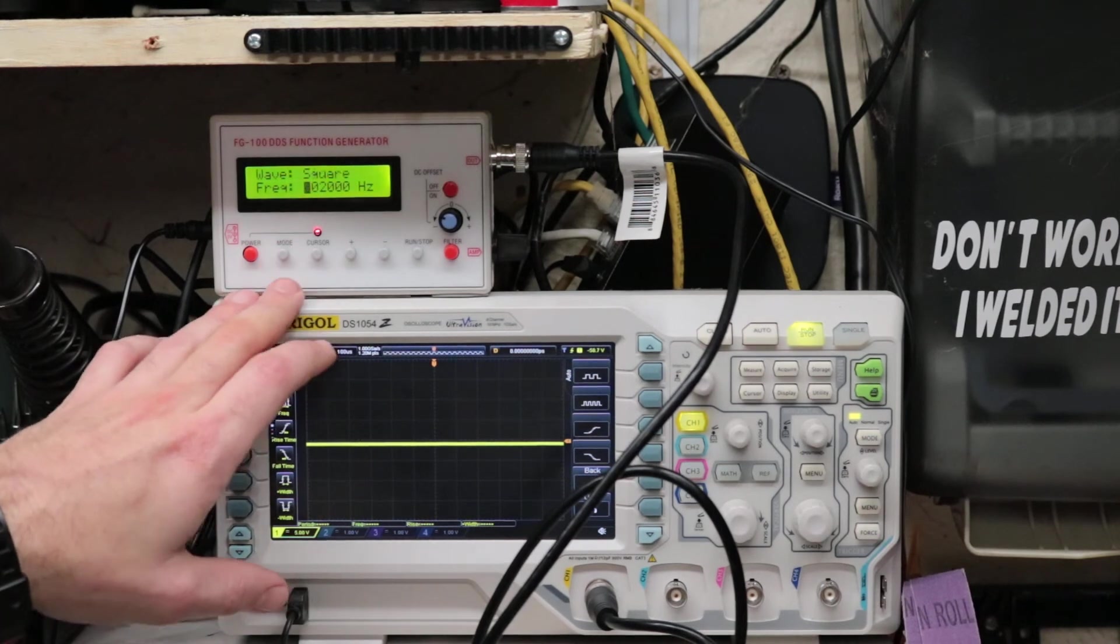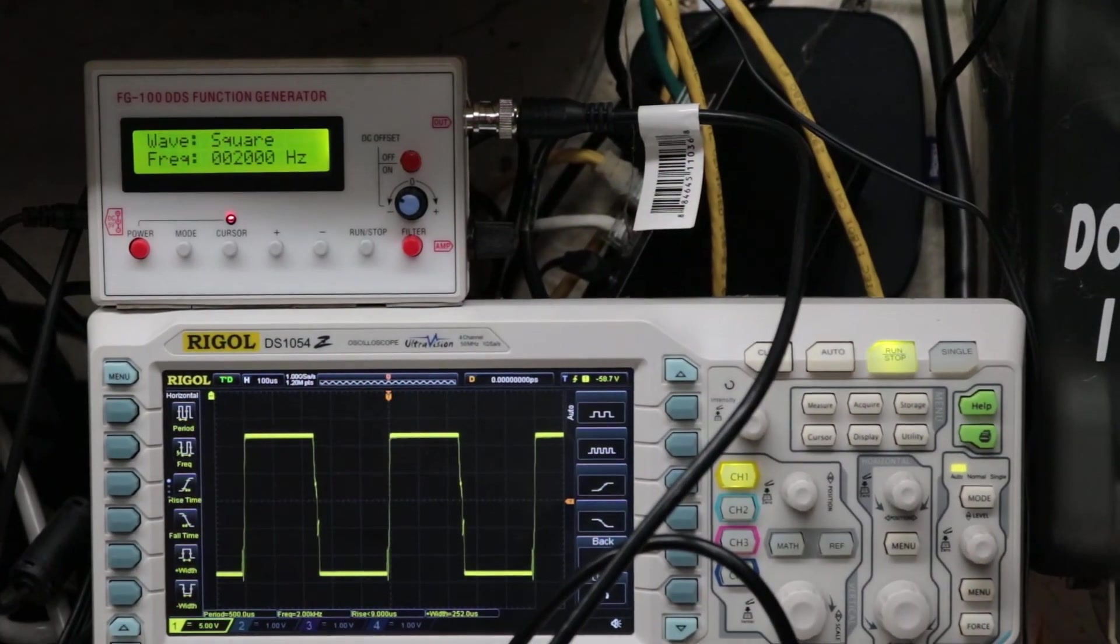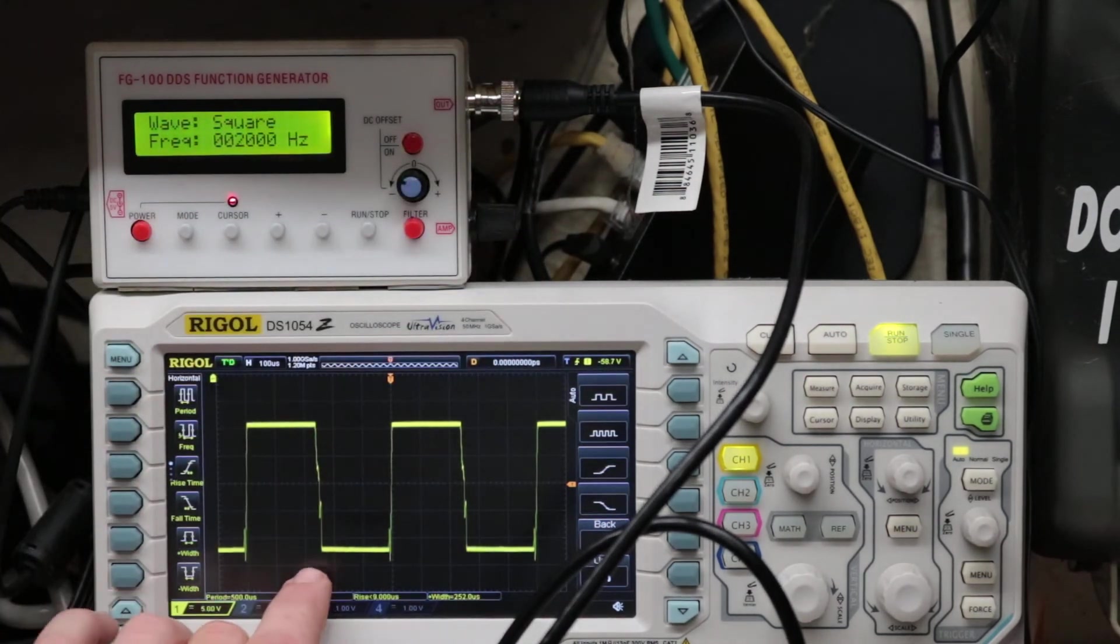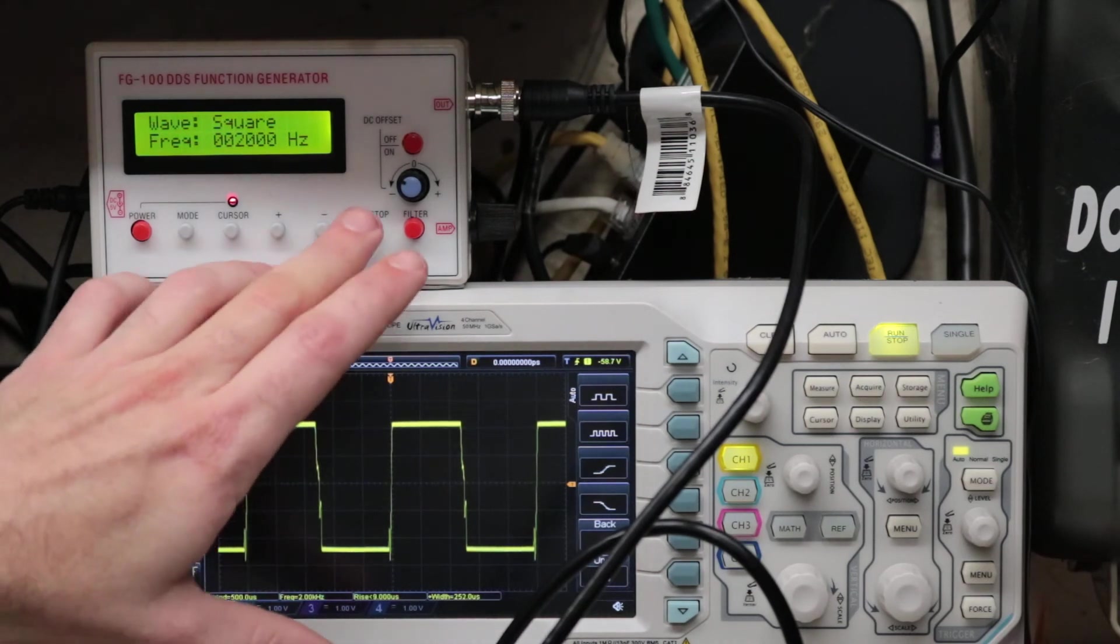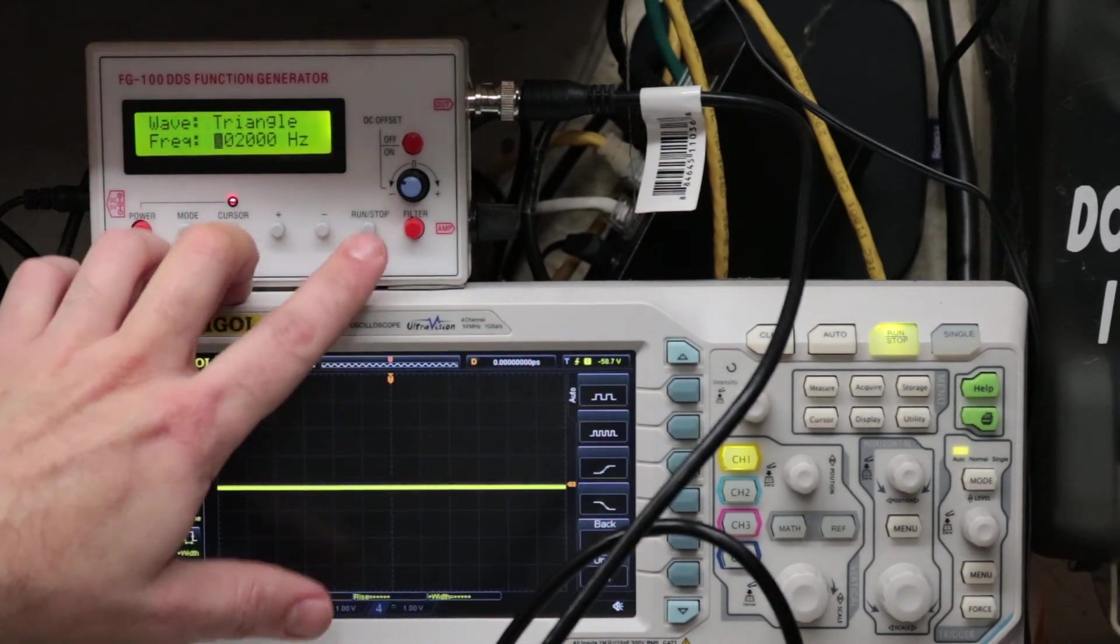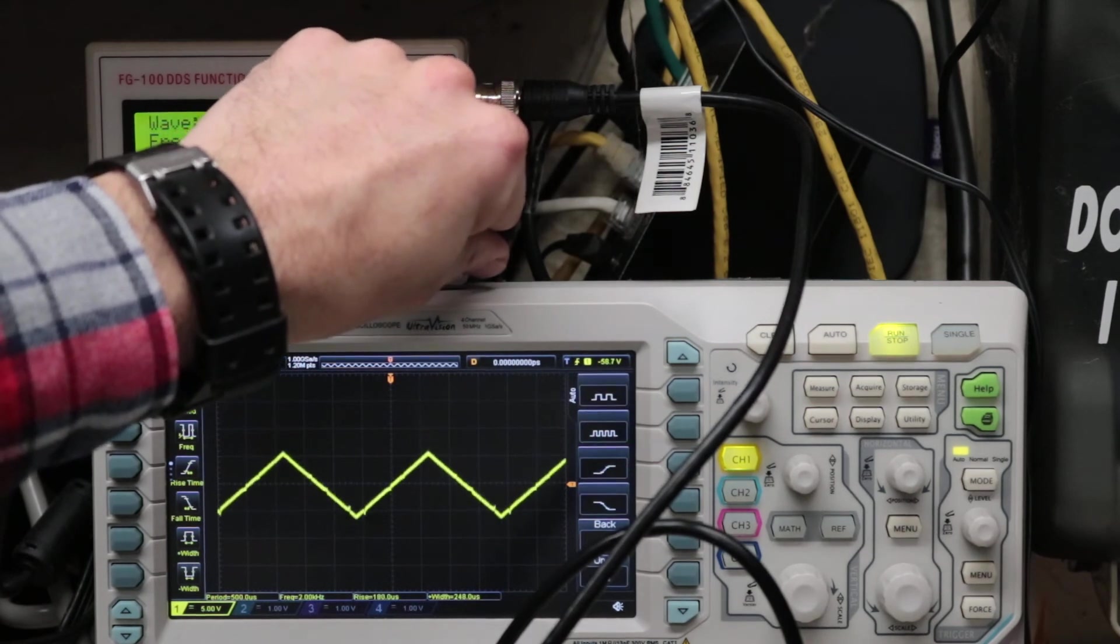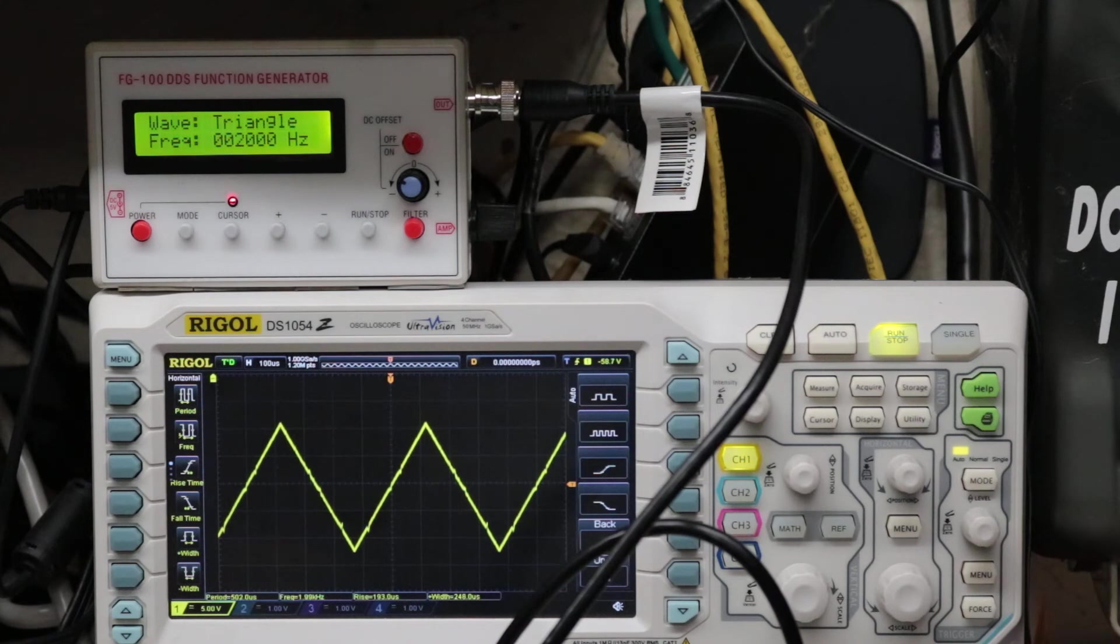We'll stop that and switch over to square wave and see what that looks like. So not too bad - the rise times are not perfect, but again it's a $20 function generator. We'll check the triangle wave, change our amplitude. Not terribly bad either, got a little bit of jitter in there but again I think that's coming from the cable.